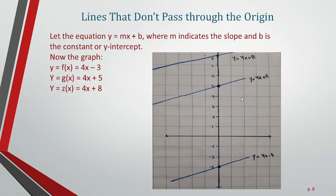Let's discuss lines that don't pass through the origin. Having three linear functions: f(x) = 4x - 3, f(x) = 4x + 5, f(x) = 4x + 8. From the equation y = mx + b, m is the slope and b is the y-intercept.